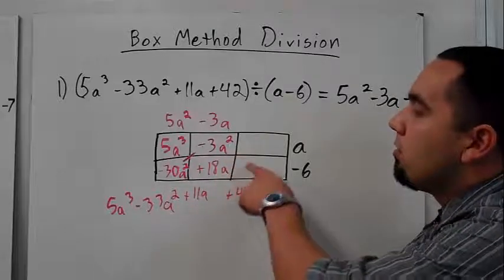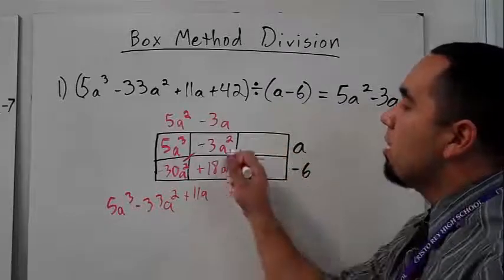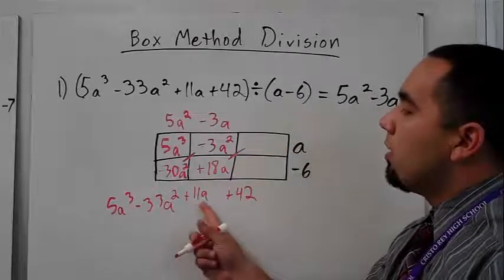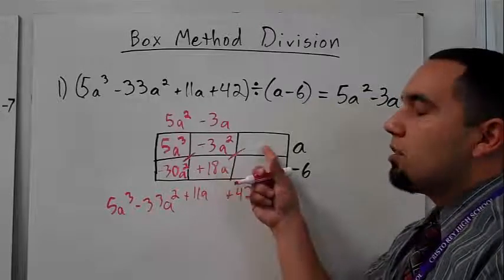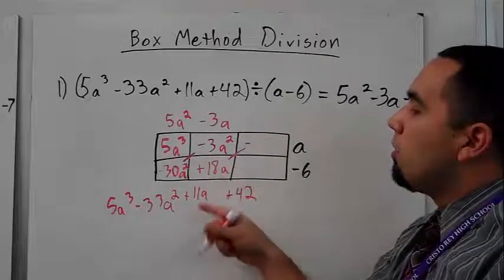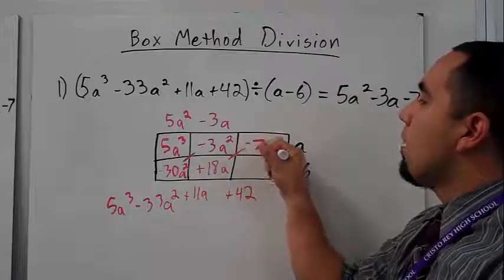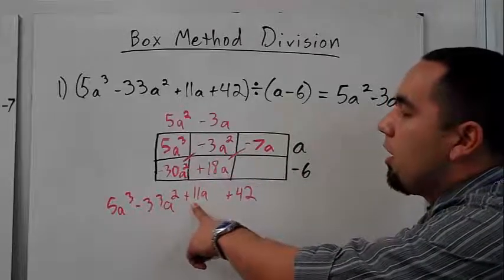And again, now I can do my addition, because I know that this box and this box should add together and give me 11a. Well, if I'm already at 18a, this number must, this box must be a negative, right? And it must be a negative 7a. Negative 7 plus 18 gives me the 11a.